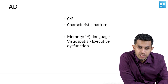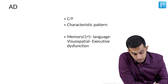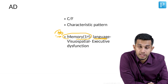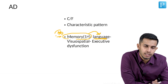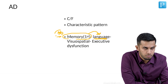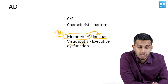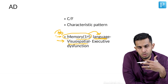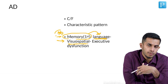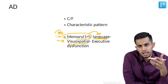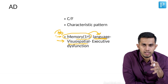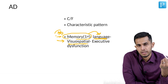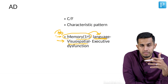The characteristic pattern of Alzheimer's disease clinical course is that memory is the first to get involved, especially recent memory, followed by language — predominantly naming objects. Then followed by visual-spatial dysfunction, which manifests as being unable to find their way back home when they go out to shop, and in later stages, difficulty navigating inside the house — not knowing where the bathroom or kitchen is.